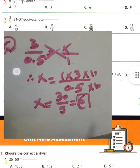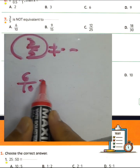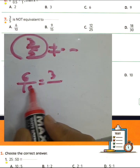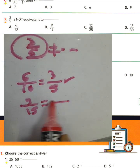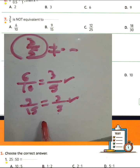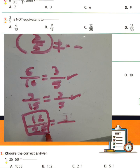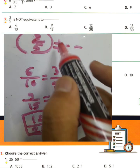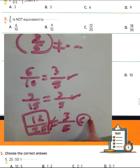Question number seven: 3 over 5 is not equivalent to what? We have 6 over 10 — divide by 2: 6 divided by 2 equals 3, 10 divided by 2 equals 5 — it's equivalent. Letter B: 9 over 15 — divide by 3: 9 divided by 3 equals 3, 15 divided by 3 equals 5 — it's equivalent. What about 12 over 25? Divide by 3 gives 4, but 25 and 12 in simplest form: if we multiply 3 over 5 by 5, it becomes 15 over 25 — not equivalent to 12 over 25. Choose letter C for question number seven.